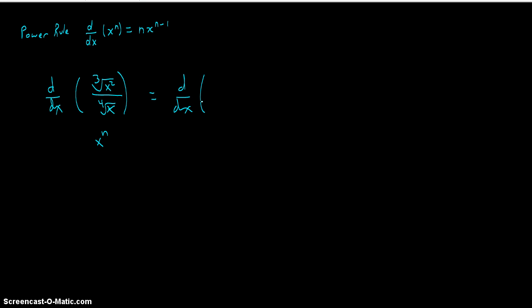could be written as x to the power over the root. So the power is 2, x to the power 2, and the root is 3, the cube root. So the cube root of x squared is x to the power 2 thirds. And then over the fourth root of x, the power is 1, the root is 4. So the fourth root of x is x to the power 1 fourth.